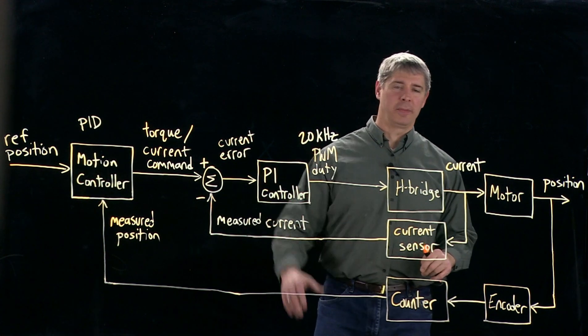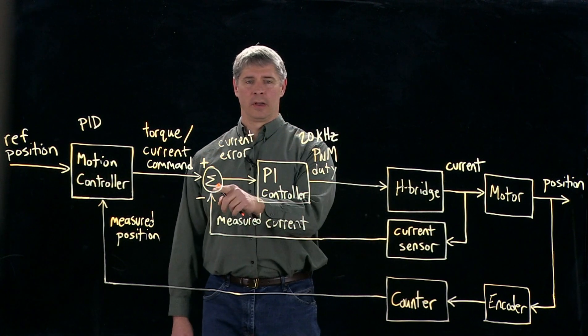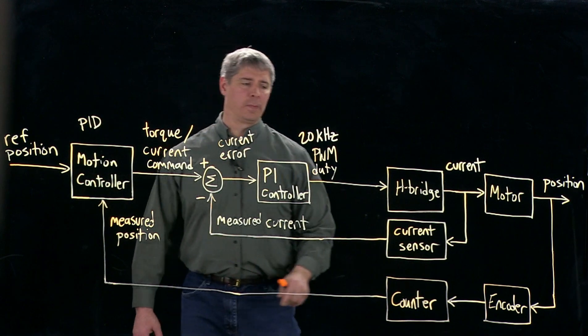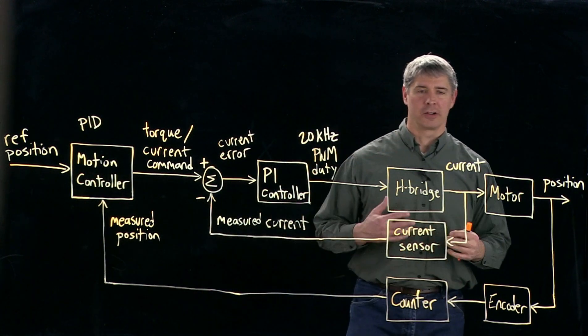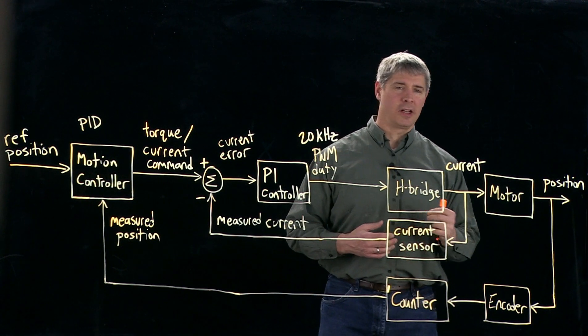And that goes back to our PI controller. So you can see we have two feedback loops here. We have this inner loop and then we have this larger outer loop. The inner loop is concerned with electronics basically, making sure that we have the right current going through the motor.